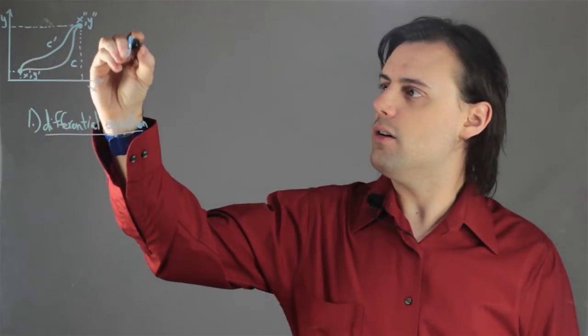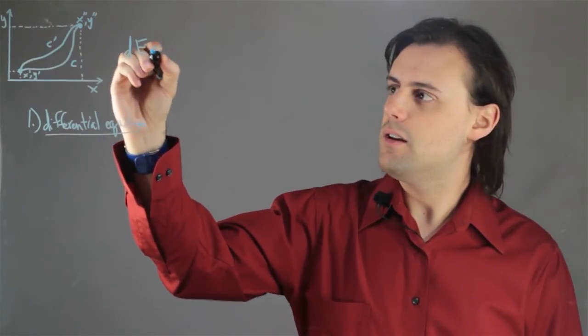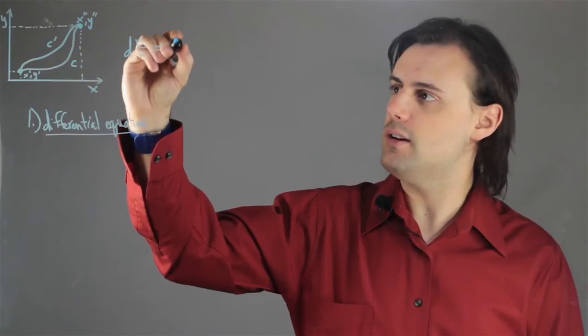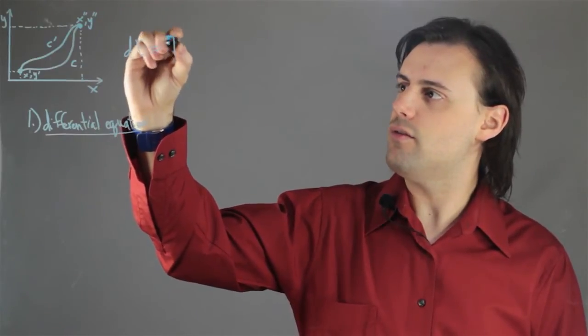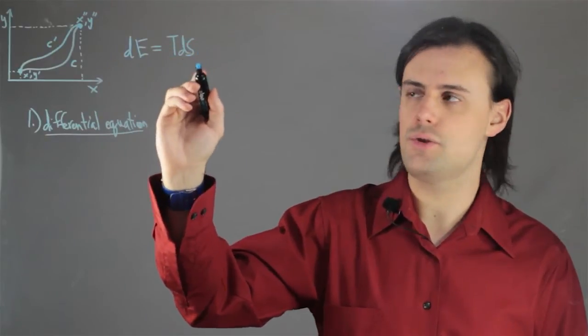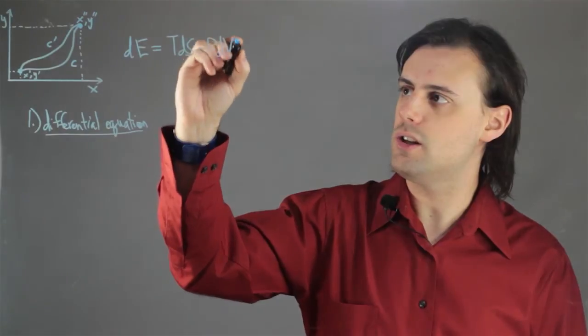So, for example, we have the change in energy of a system often given in terms of various thermodynamic quantities. So we have temperature times an infinitesimal change in the entropy minus pressure times a change in the volume. So this is an example of a differential equation.